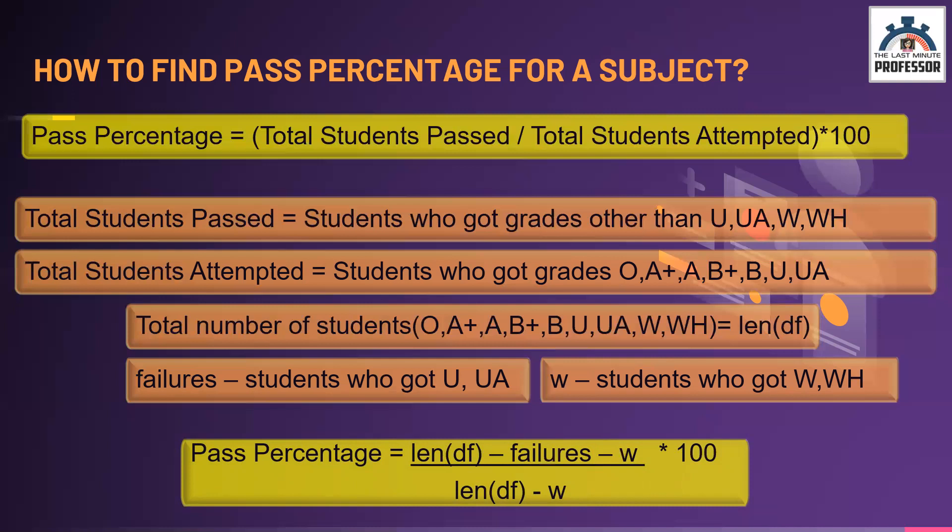The formula is as simple as you can see on the screen: pass percentage equals total number of students — that is 100 — minus failures (students who got U or UA), divided by the length of the data frame minus W, multiplied by 100. We will not take into consideration the ones who obtained W or WH, which is why I subtracted W both in numerator and denominator. This gives the pass percentage for a particular subject.